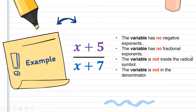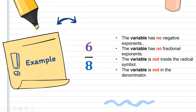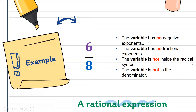Next: x plus 5 all over x plus 7. Checking: no negative exponent — check; no fractional exponent — check; variable not inside radical symbol — check; variable not in the denominator — check. Therefore, x plus 5 all over x plus 7 is a rational expression. Next: 6 all over 8. We don't have any variable, so all conditions are met. It is a polynomial of degree one, so 6 all over 8 is a rational expression.